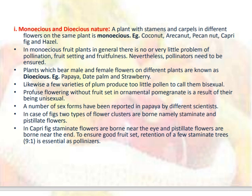Profuse flowering without fruit set in ornamental pomegranate is a result of their being unisexual. A number of sex forms have been reported in papaya by different scientists. In the case of fig, two types of flower clusters are borne, namely staminate and pistillate flowers. In caprifig, staminate flowers are borne near the eye and pistillate flowers near the end. To ensure good fruit set, retention of a few stamen trees is essential as pollinizers.